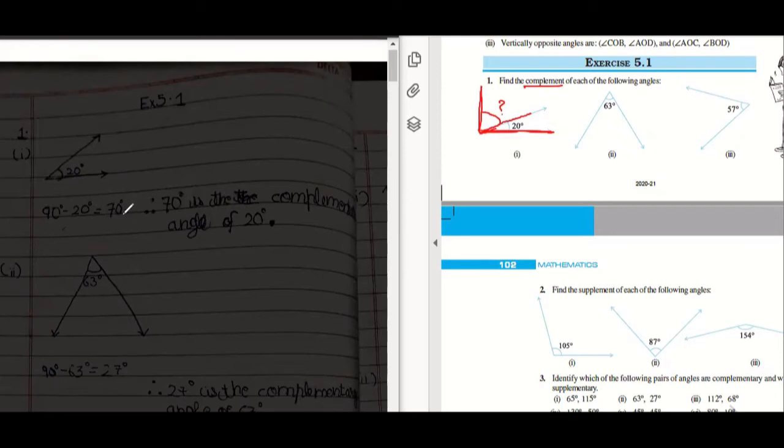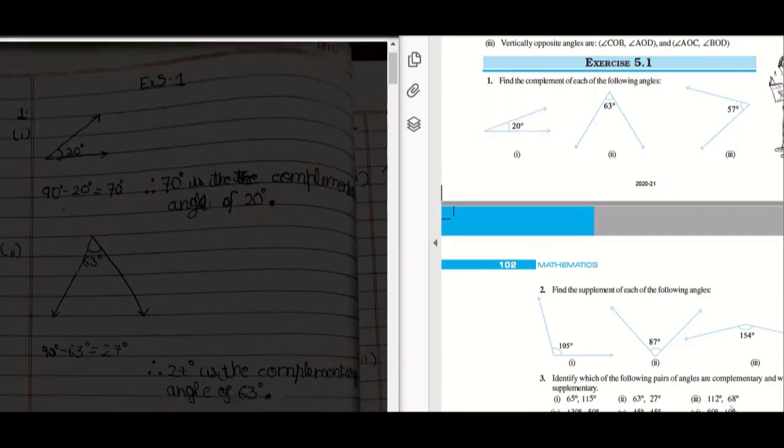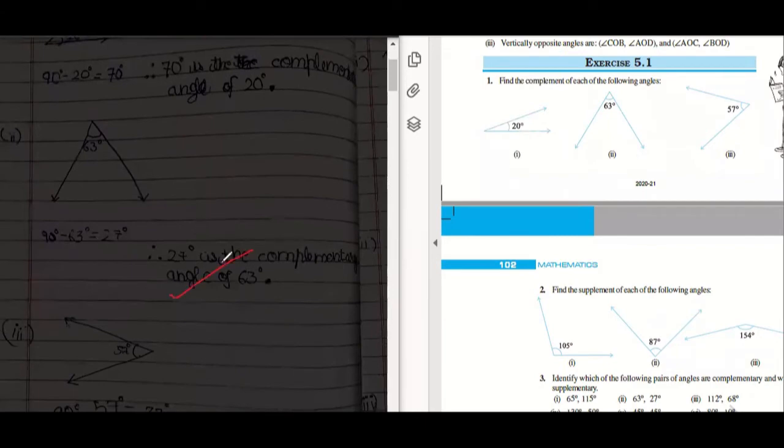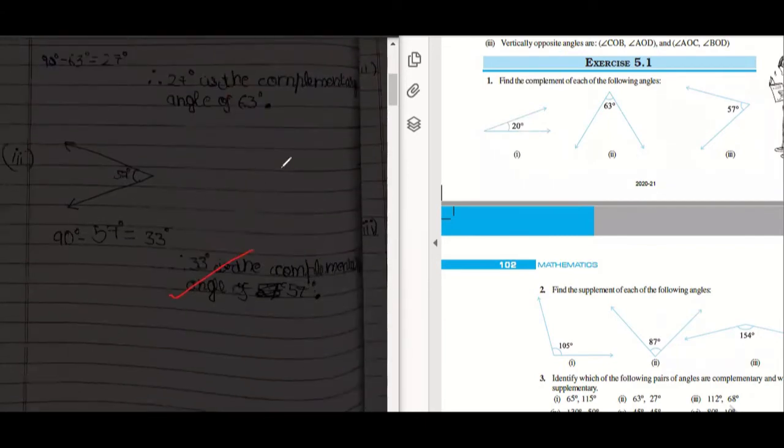So 90 minus 20 is 70. Very good, you have to write the statement: 70 degree is the complementary angle of 20. Similarly in this case, 63 to 27, this is also correct.